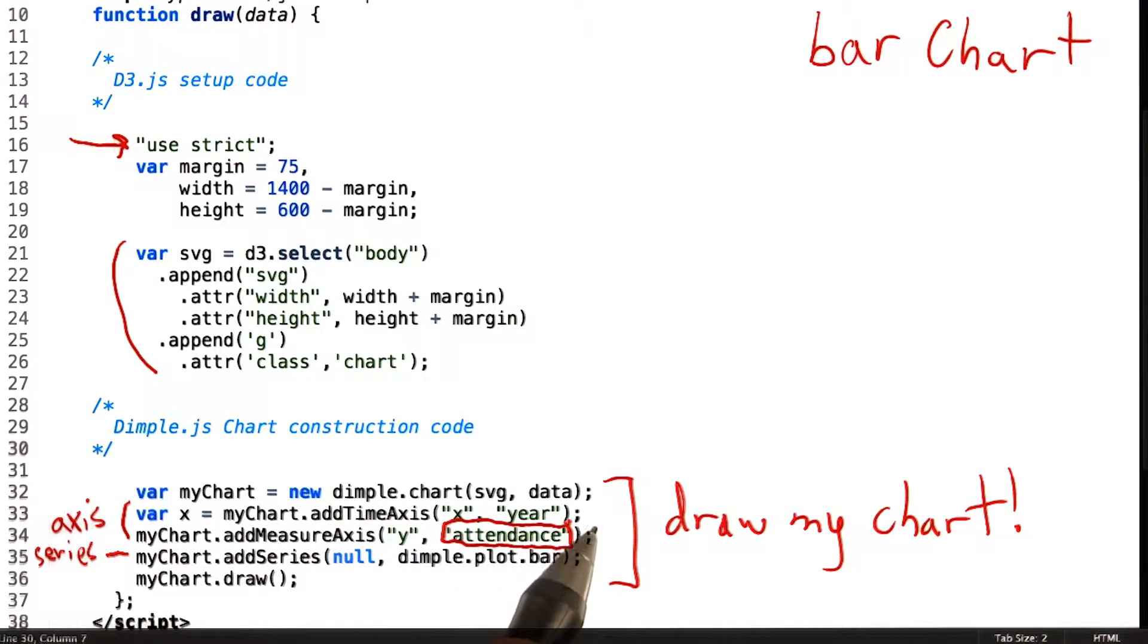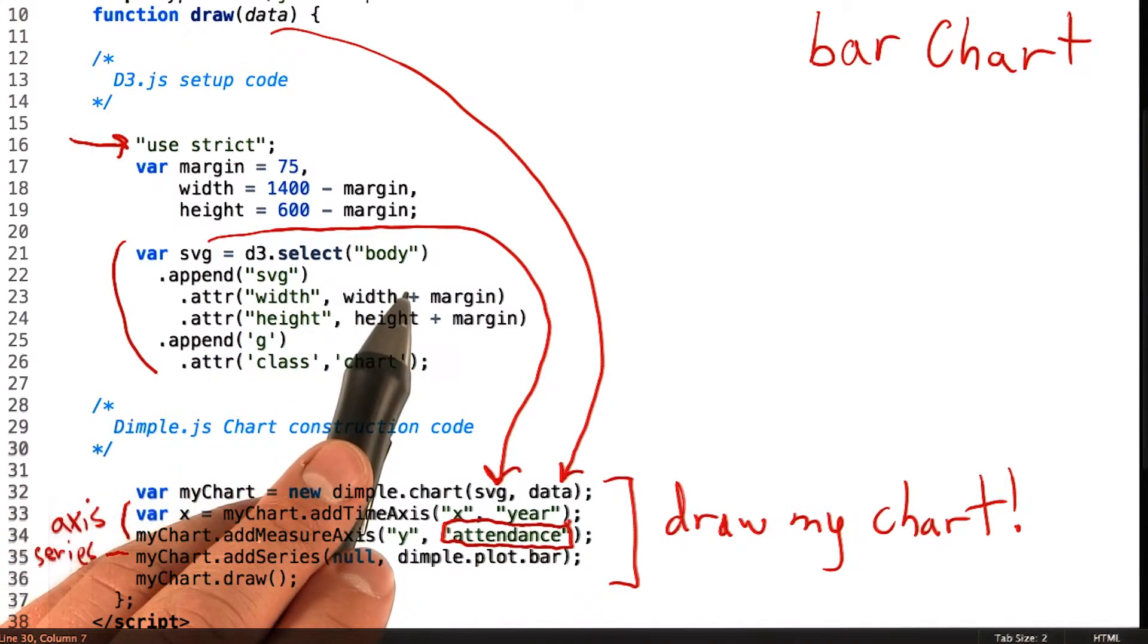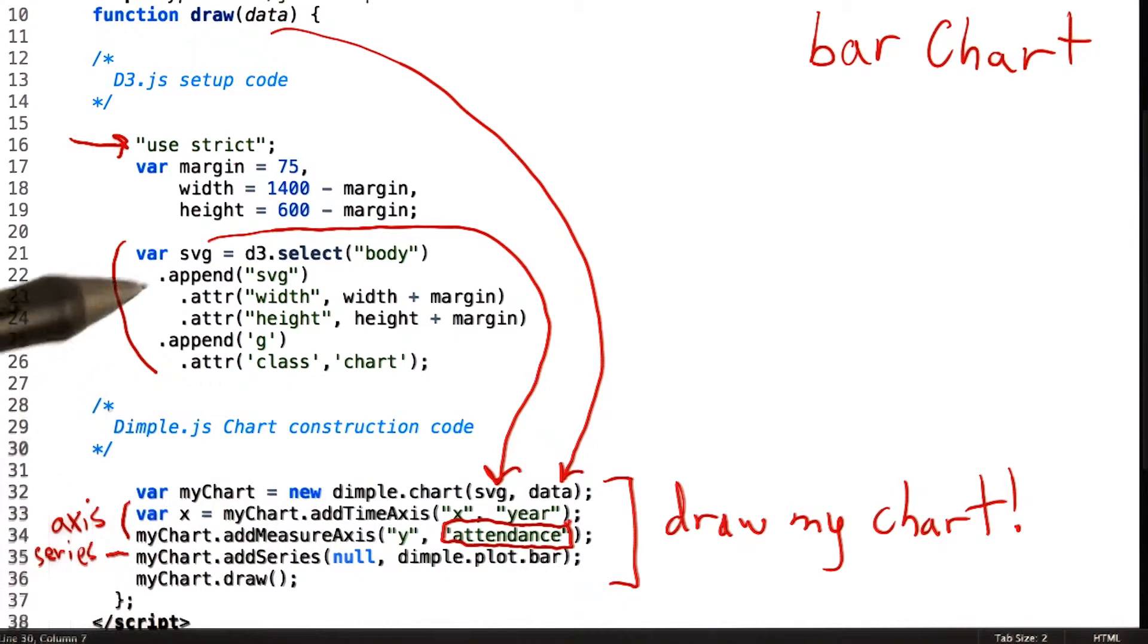The second argument is a JavaScript object representing the data we'd like to display. In this case, the SVG is what's returned from the D3 code that initially appends the SVG object.